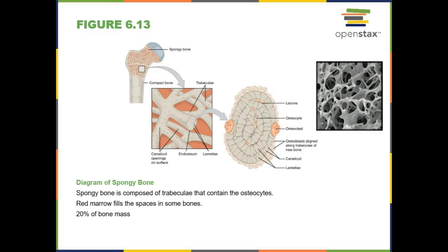Spongy bone only makes up about 20 percent of all bone mass, but it's really important because it lightens our weight so we can move around. If our bone was completely solid we wouldn't be able to move nearly as effectively; if our skull was completely solid we wouldn't be able to hold our head up. Spongy bone grows in lines where we have a lot of stress, providing protection from weight-bearing stressors.